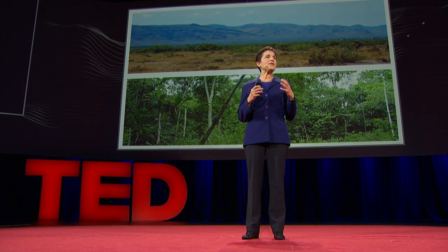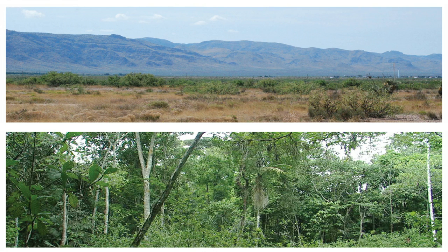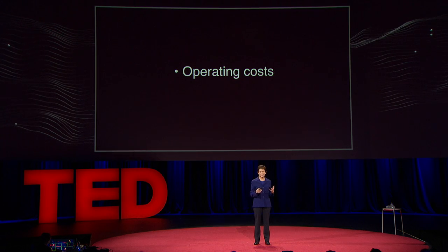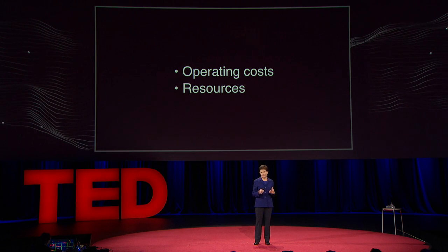There are more than 12,000 species of ants in every conceivable environment, and they're using interactions differently to meet different environmental challenges. One important environmental challenge that every system has to deal with is operating costs — just what it takes to run the system. Another environmental challenge is resources: finding them and collecting them.